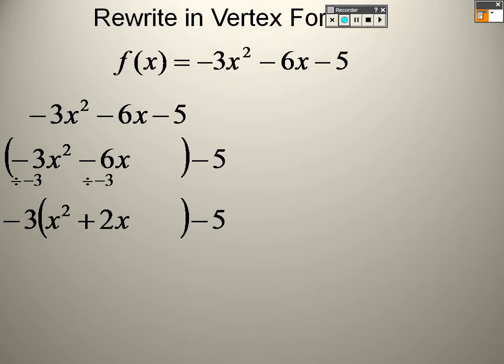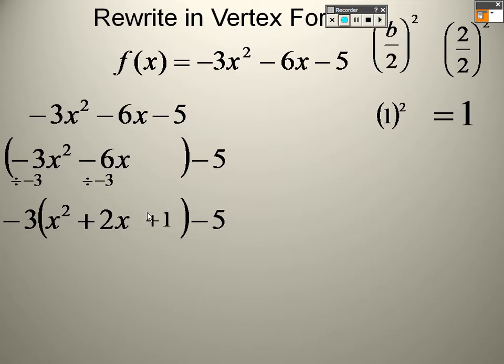Okay, so now that I did that, I do b over 2 squared, which is 2 over 2 squared. 2 divided by 2 is 1, and 1 squared is 1. So that means I'm going to put a plus 1 in here.